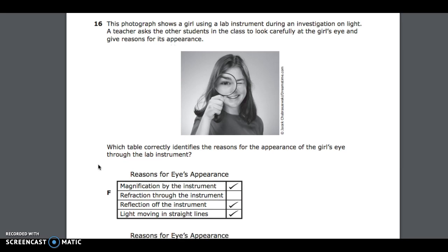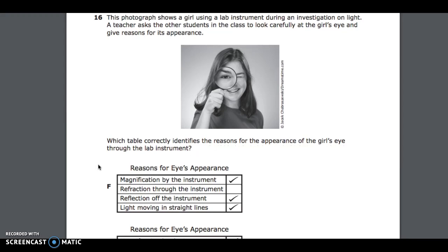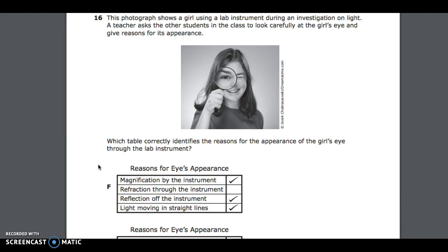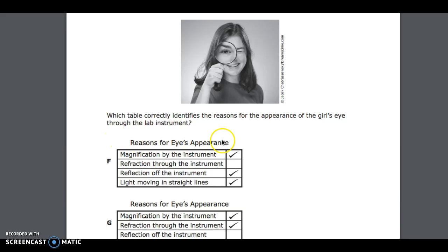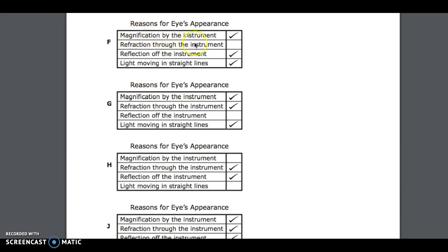Number 16. This photograph shows a girl using a lab instrument during an investigation on light. A teacher asked the other students in the class to look carefully at the girl's eye and then give reasons for its appearance. Which table correctly identifies the reasons for the appearance of the girl's eye through the lab instrument? Reasons for eye's appearance: magnification by the instrument, refraction through the instrument, reflection off the instrument, light moving in straight lines.